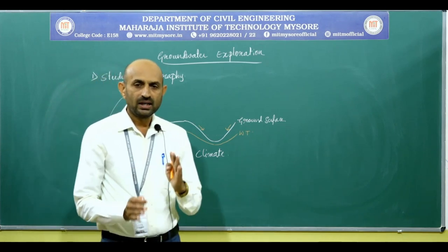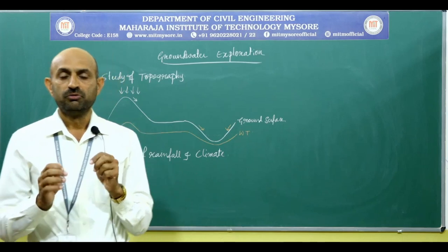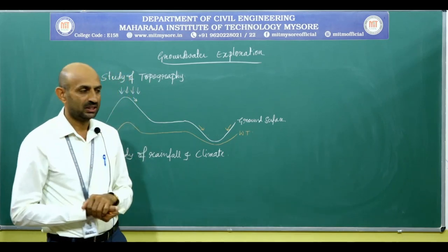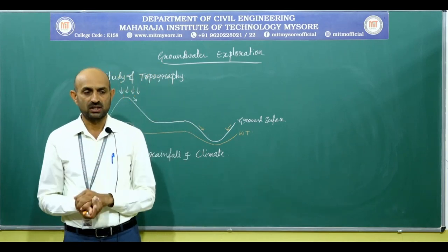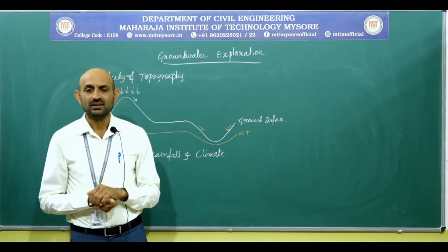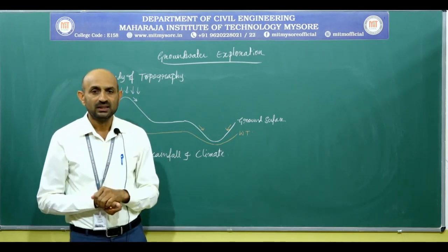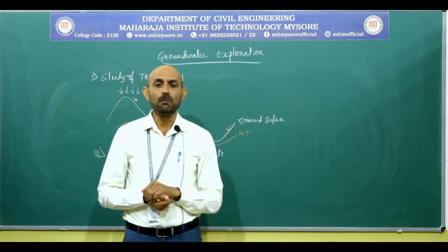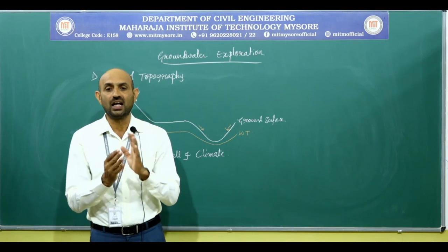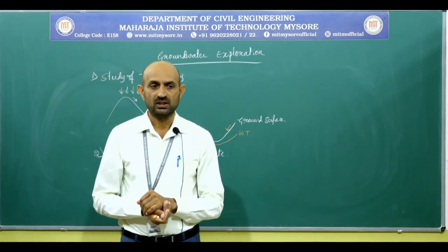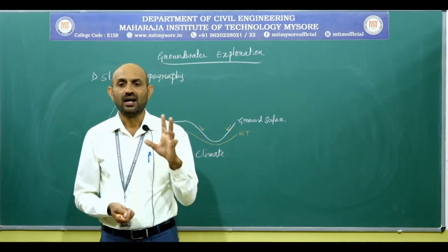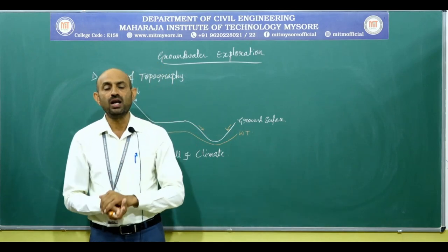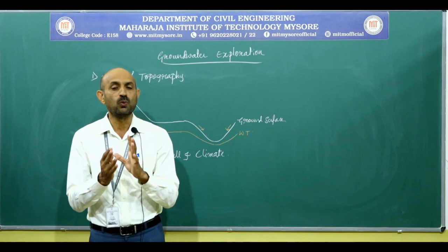By studying rainfall and climate, we can determine which climate is suitable for seeking groundwater. In regions with a humid climate, there will be less evaporation and high percolation when precipitation takes place. Whereas in places with hot and dry — which means arid — climate, there will be high evaporation. When evaporation is high, there will definitely be less percolation. Therefore, regions having good rainfall and humid climate will have good groundwater potential.